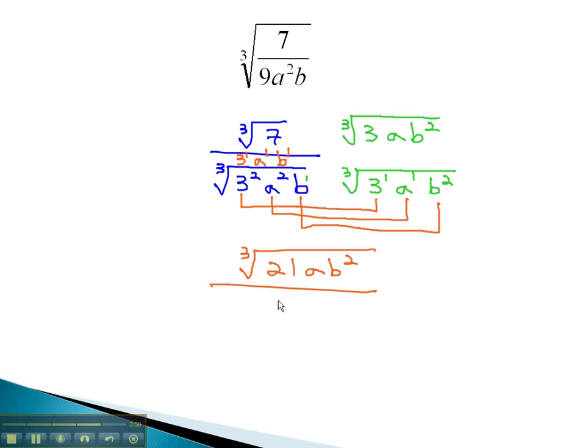With no radicals left, we simply have 3ab for our final answer. By multiplying by any missing factors, using the index to decide how many we need, we can rationalize a denominator so that we have no radicals left on the bottom.